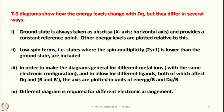TS diagrams show how the energy levels change with DQ but differ from Orgel diagrams in several ways. The ground state is always taken as the x-axis, providing a constant reference point, and other energy levels are plotted relative to it. Low-spin terms — states where the spin multiplicity is lower than the ground state — are also included. To make the diagram general for different metal ions and different ligands, both axes are plotted in units of E/B versus DQ/B. This means different diagrams are required for different electronic configurations.